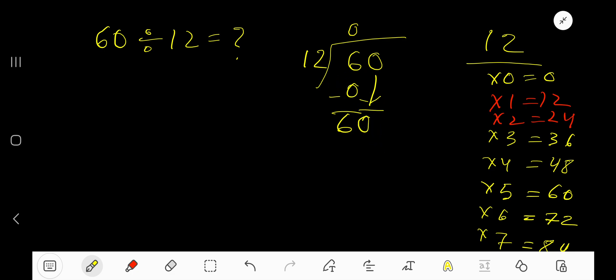12 goes into 60 how many times? 12 goes into 60 five times. So 5 times 12 is 60. Let me check: 12 times 5, 5 times 2 is 10, write 0 carry 1 to the next column, 5 times 1 is 5 plus 1 is 6, that is 60. So if you subtract you get 0. So our answer is 05, which means 5.